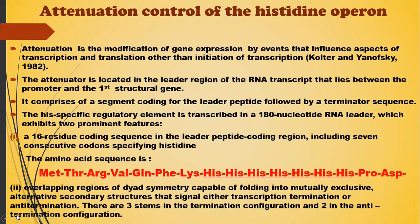The first prominent feature is a 16-residue coding sequence in the leader peptide coding region, including seven consecutive codons specifying histidine. The second is overlapping regions of dyad symmetry capable of folding into mutually exclusive alternative secondary structures that signal either transcription termination or anti-termination. There are three stems in the termination configuration and two in the anti-termination configuration.